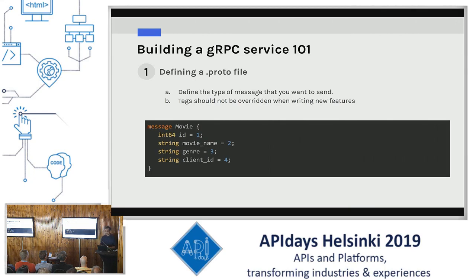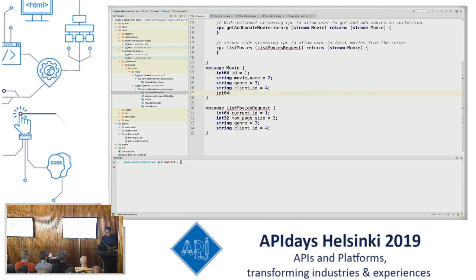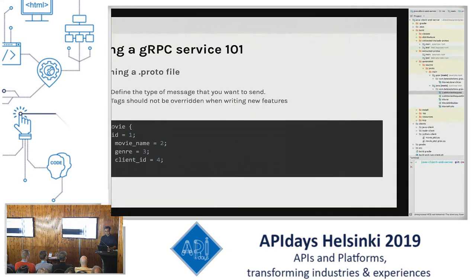Tags should not be overridden when writing new features in order to maintain backward and forward compatibility. For example, to add a rating feature to the movie message, you'd just add: int64 rating = 5, and it's ready to be used. So designing your proto carefully is critical.